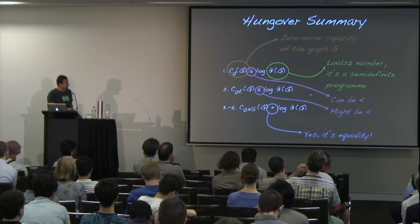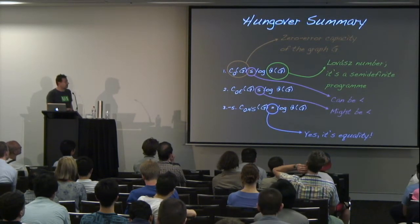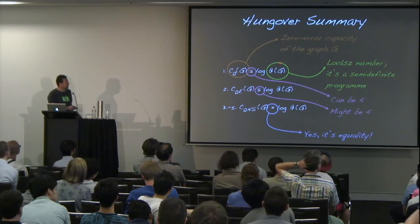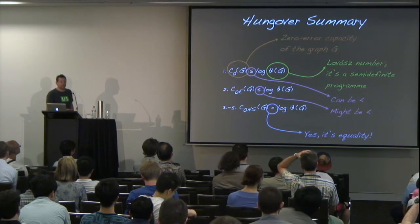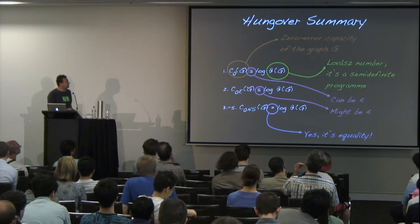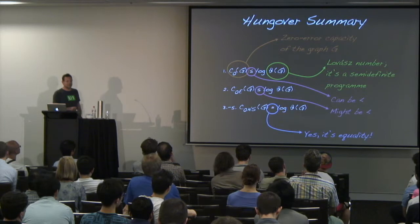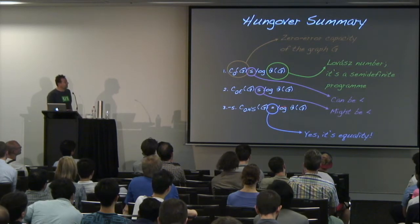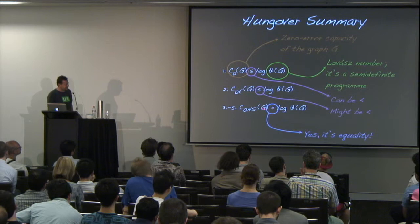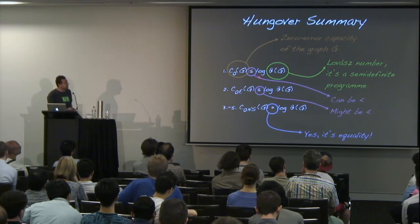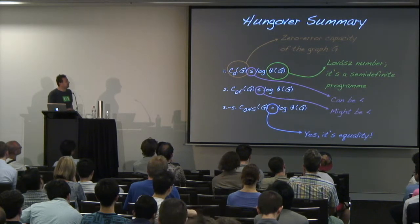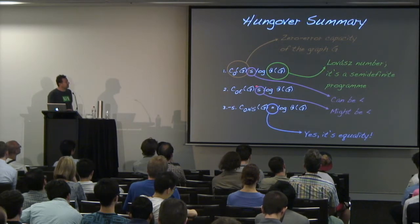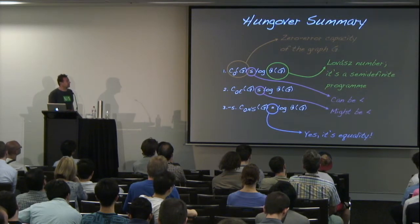In the second half, the main result is that if you bump up the power of your assisting resources from entanglement assistance to no-signaling correlations, then you get an equality. The first two are just inequality signs — for the first one, we know it's strictly different in some cases, and for the second one, we just don't know the status. It might or might not have examples of strict inequality.